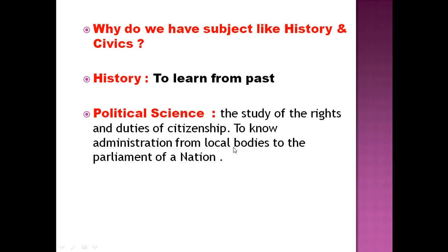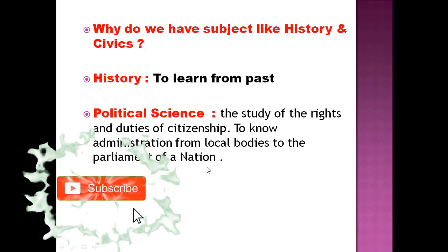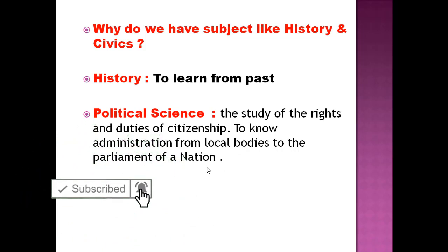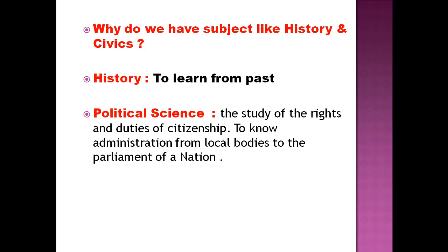First, let's understand why we have subjects like History and Civics — now called Political Science. History means learning from the past. Political Science means the study of the rights and duties of citizens, and understanding administration from local bodies to parliament. This year in Political Science, you will learn about the United Nations and international organizations, from gram panchayat at the local level, to the assembly at the state level, to parliament at the national level, and then the United Nations at the international level.